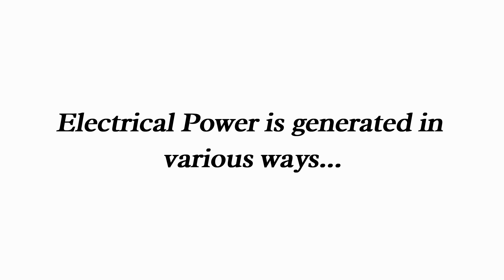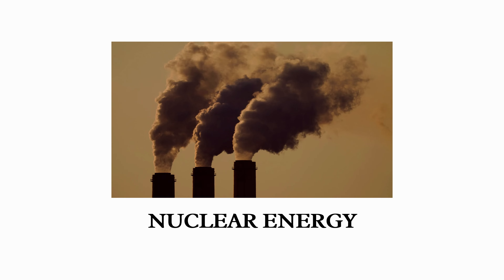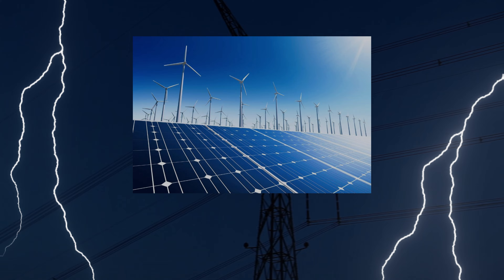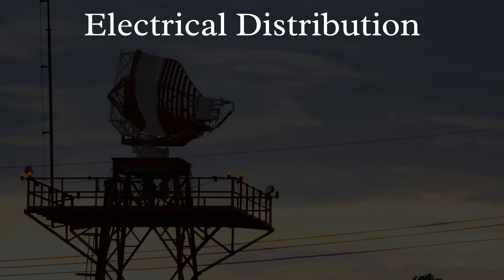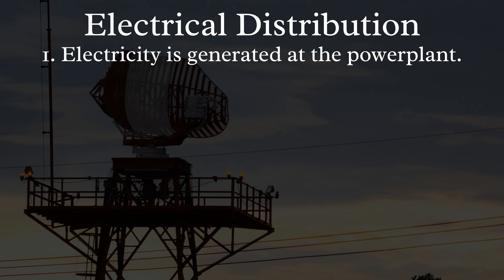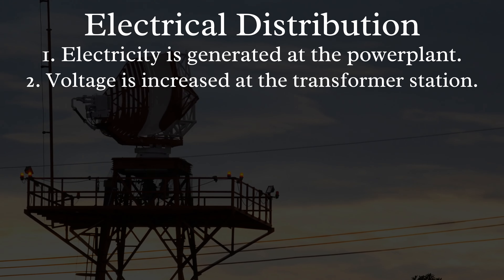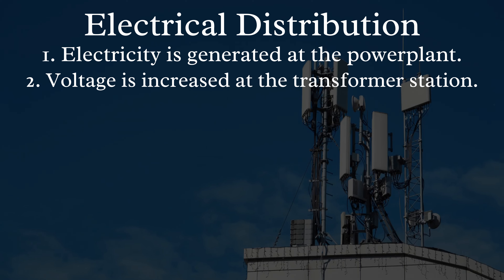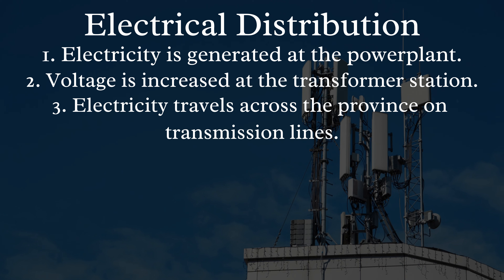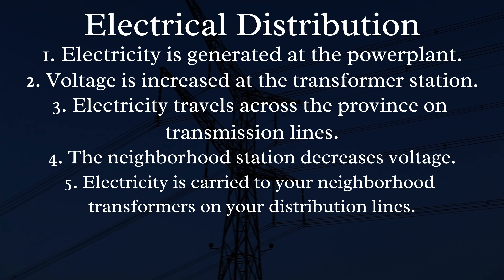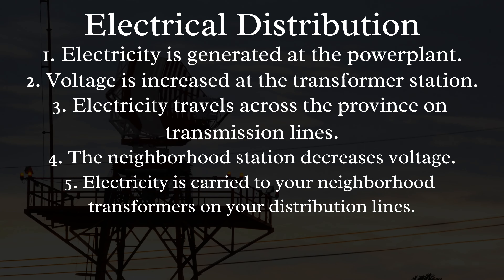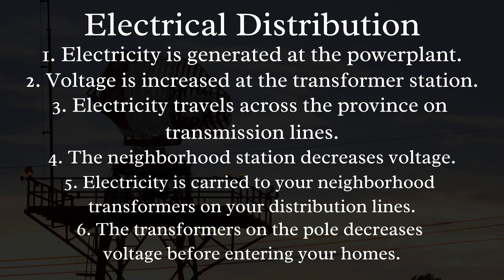Electrical power is generated in various ways including fossil fuels, nuclear, and renewable sources. To further understand electrical power, here is the process of electricity distribution to homes: First, electricity is generated at the power plant. Second, voltage is increased at the transformer station. Third, electricity travels across the province on transmission lines. Fourth, the neighborhood station decreases voltage. Fifth, electricity is carried to neighborhood transformers on distribution lines. Finally, transformers on the pole decrease voltage before it enters the home.